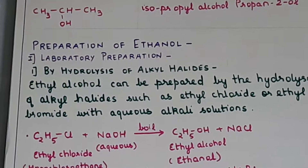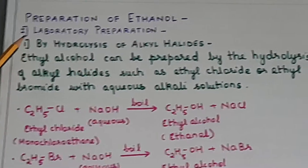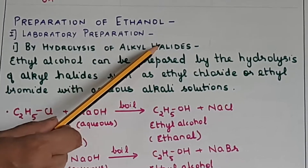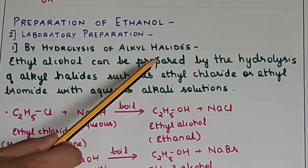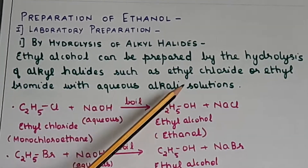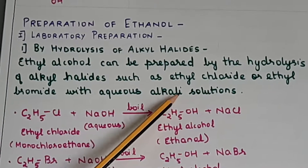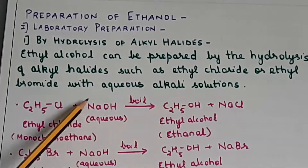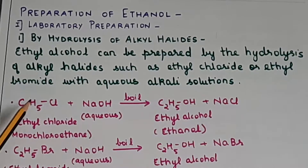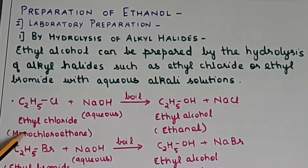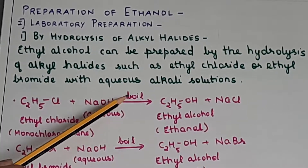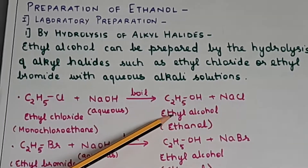The laboratory method for preparation of alcohol is by hydrolysis of alkyl halides. Alkyl halides are RX, where R is the alkyl group and X stands for the halogen. Ethyl alcohol can be prepared by hydrolysis of ethyl chloride or ethyl bromide using aqueous alkali solution — so it is a hydrolysis reaction with aqueous alkali, not just water. Using NaOH or KOH: ethyl chloride (C2H5Cl, IUPAC name chloroethane) plus aqueous NaOH, boil, gives C2H5OH plus NaCl. This is ethyl alcohol or ethanol.